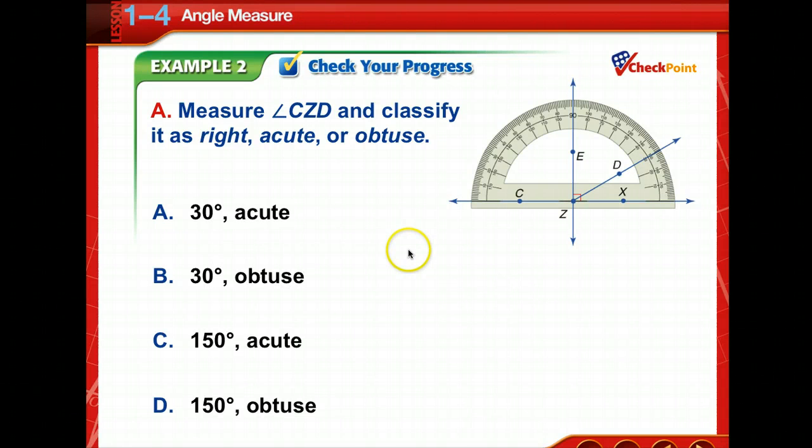So now, we're to measure CZD, and classify it as right, acute, or obtuse. So take just a minute and study this diagram, and then come back and let me know what you find out. Okay, CZD. We know it's greater than 90, don't we? So we know it's obtuse, and because it's obtuse, we're going to read the larger number, which is 150. Good job.